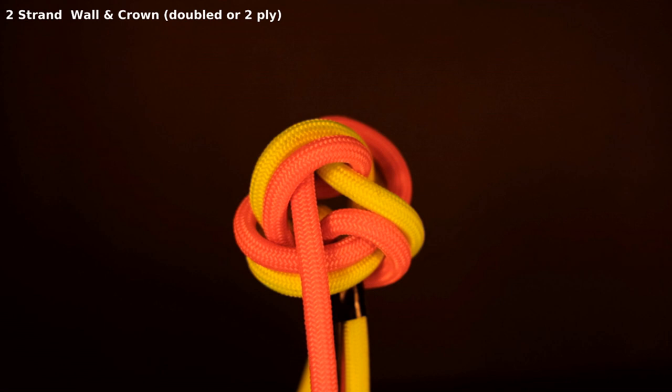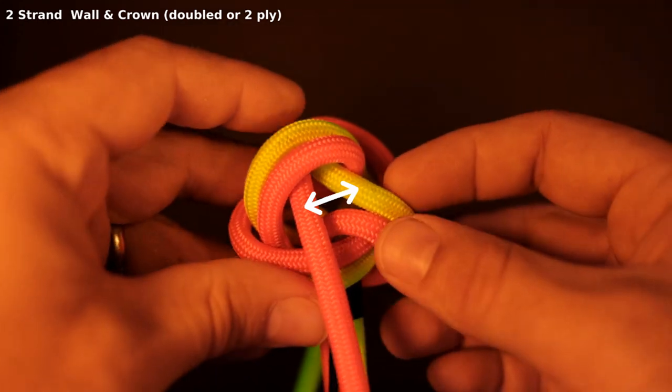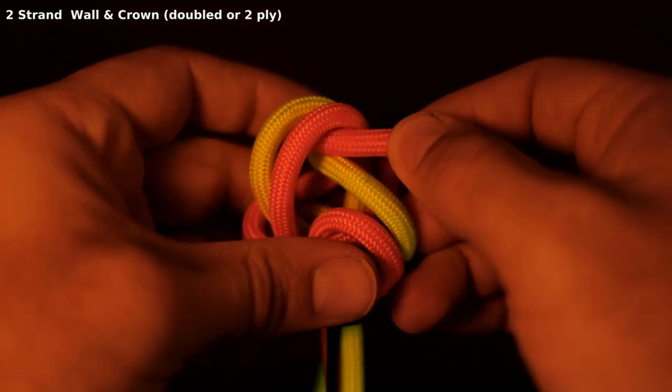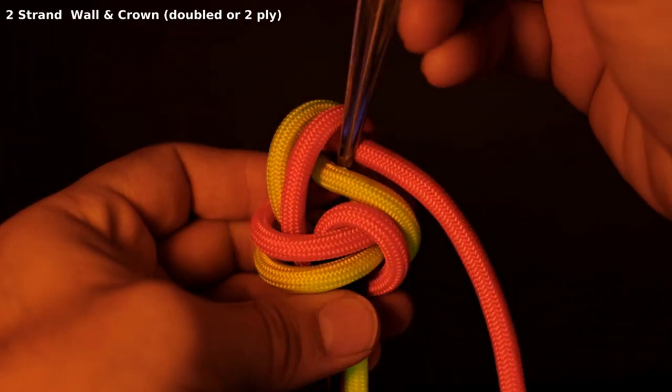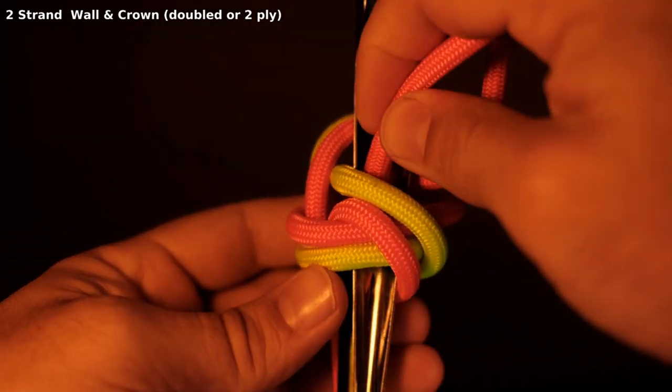Each part is followed until the entire path is doubled, where a choice can be made to finish the knot, or to expand it further. We can expand it further by continuing along the adjacent lead, which triples it into a three-ply knot. We'll triple a knot later, but for now, let's finish this knot by tucking the strands down along the stem.